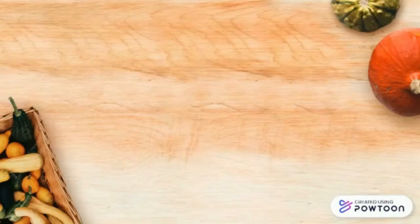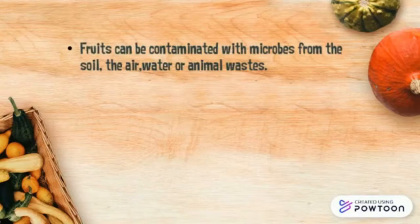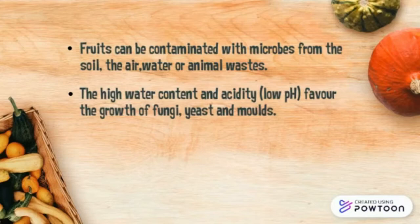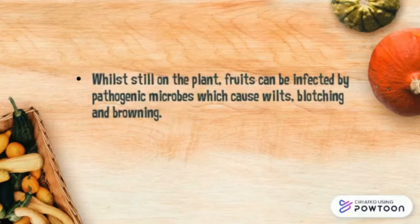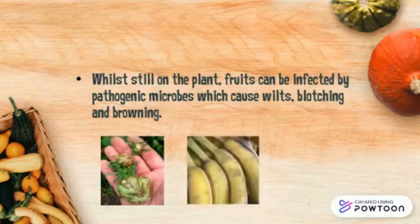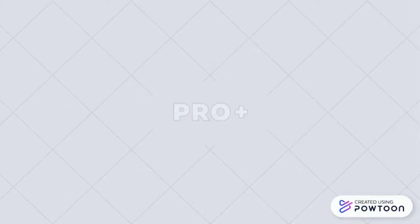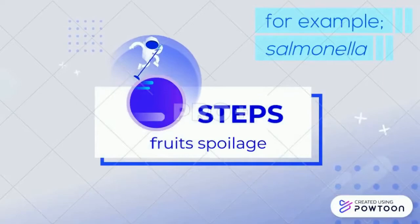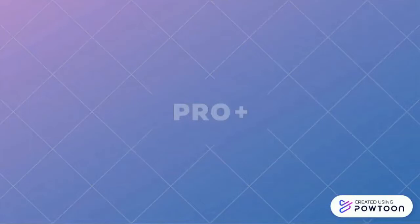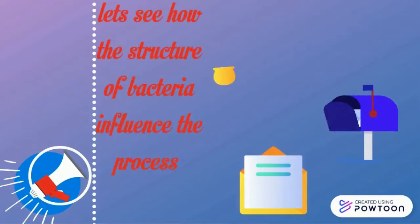Fruits also carry a natural load of microorganisms acquired from their environment. Fruits can be contaminated with microbes from the soil, air, water or animal waste. The high water content and low pH acidity favor the growth of fungi, yeast and molds. Fruits still on the plant can be infected by pathogenic microbes which cause blushing and browning.